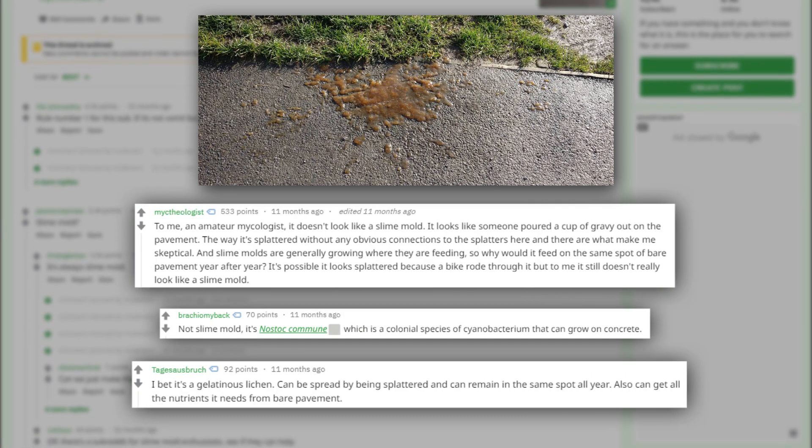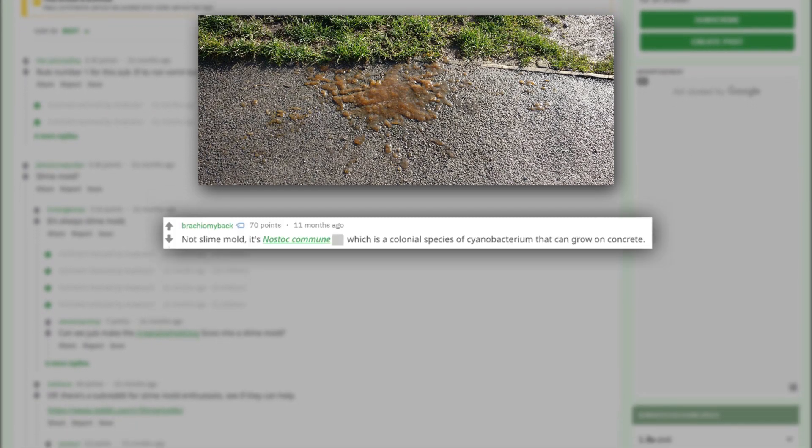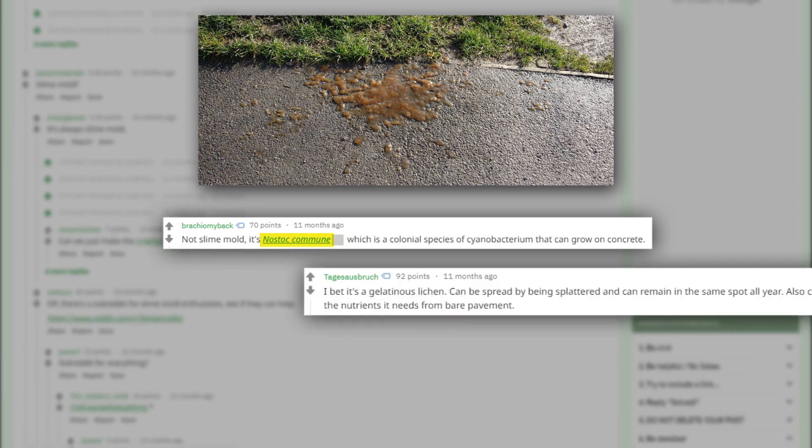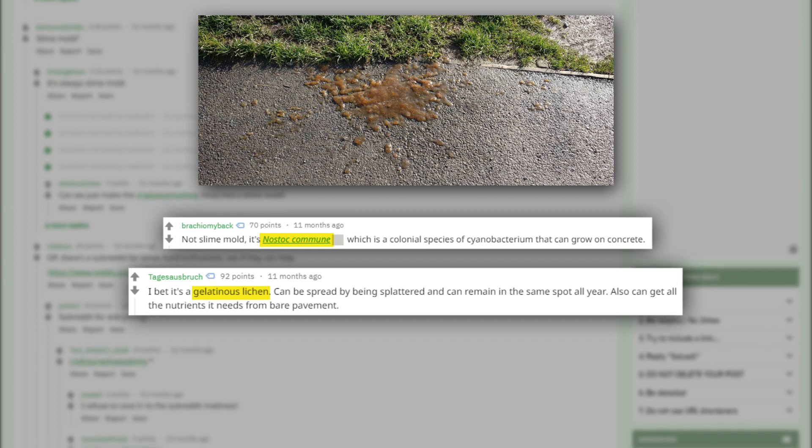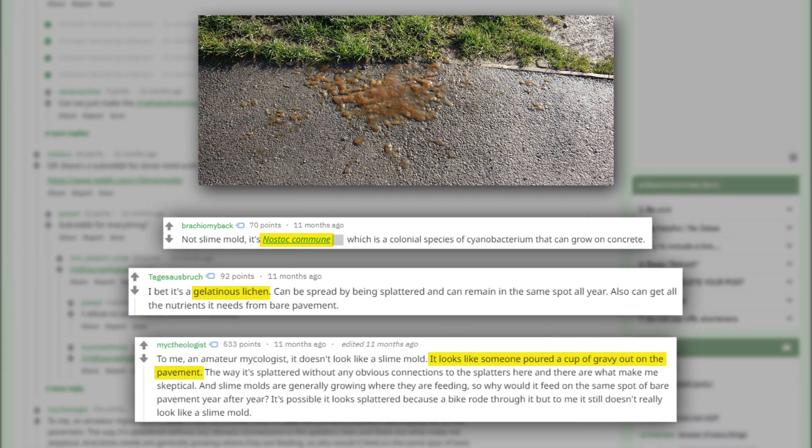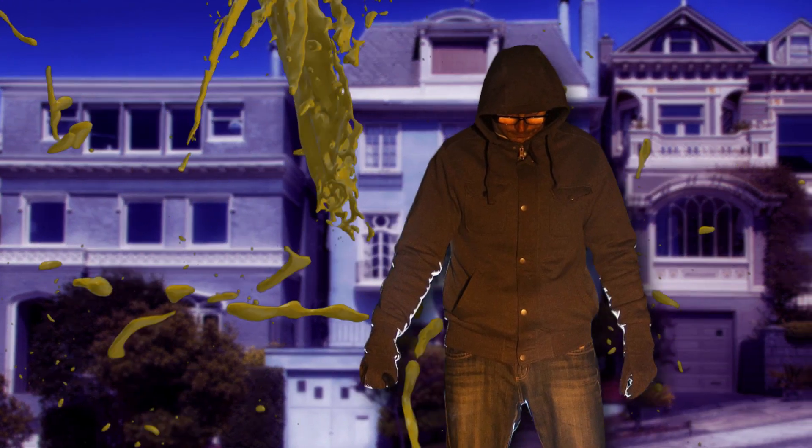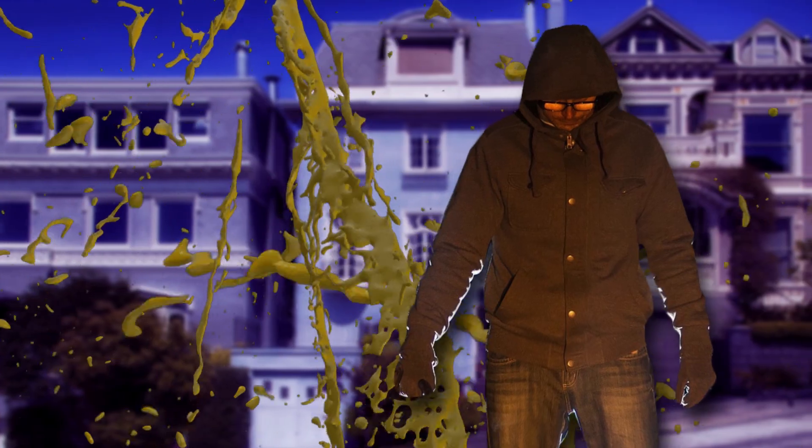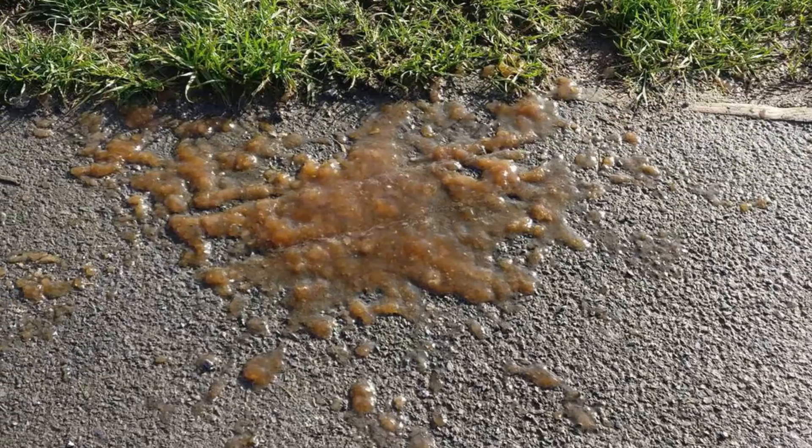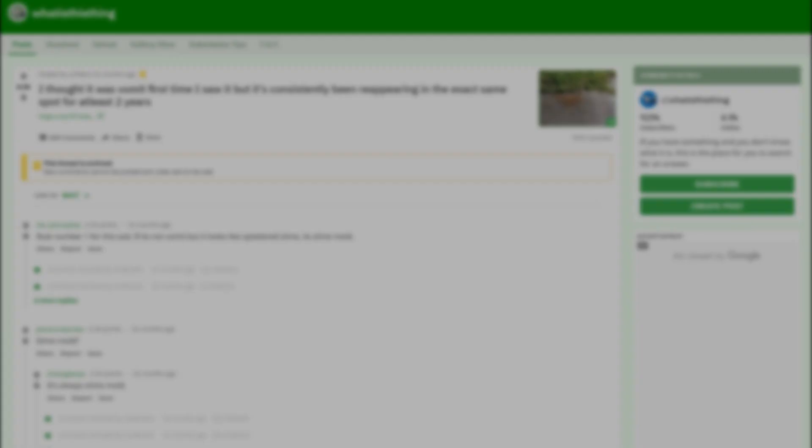The response was mixed. Some users suggested it was cyanobacterium, like the Nostoc commune algae, or gelatinous lichen, while others attested with confidence that it was a gravy spillage, or the spilled contents of a nearby trash can. Unless there's a notorious gravy bandit loose and causing havoc in Pdamm's town, those final options seem a little unlikely.